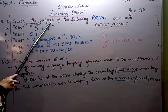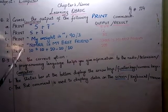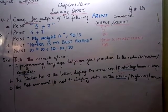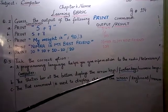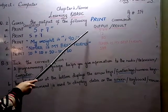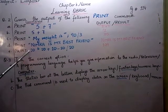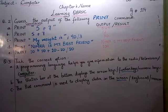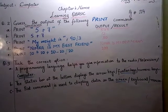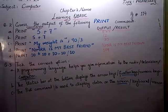Output means results. Whatever we give instructions to the computer the computer will show them on the screen and the output is called as the result. Now these are commands given by us to the computer because computer runs upon the instructions or the commands given by us. We are the programmers.